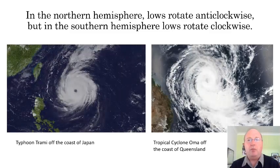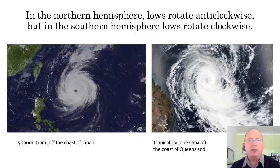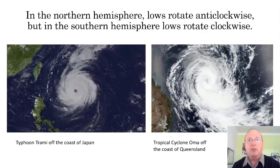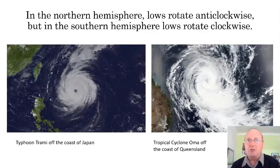A second piece of evidence we can observe today is the fact that low-pressure storms rotate different ways in the northern and southern hemispheres. In the northern hemisphere, hurricanes and typhoons — both very powerful storms that circulate around a centre of low air pressure — always rotate anti-clockwise. But in the southern hemisphere, powerful storms called cyclones always rotate clockwise. If the Earth were not rotating, then storms would be both clockwise and anti-clockwise randomly in both hemispheres. This is also evidence that the Earth rotates on its axis.